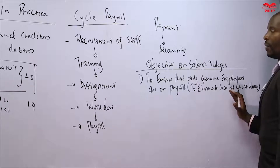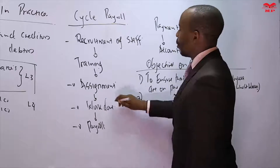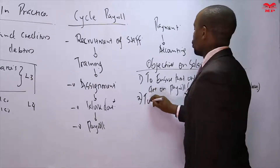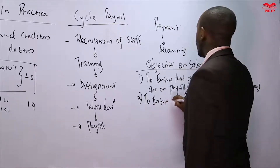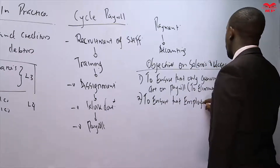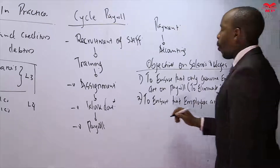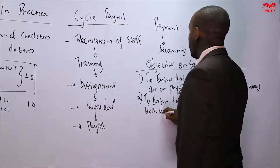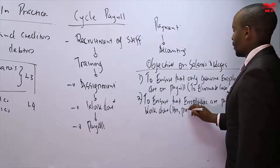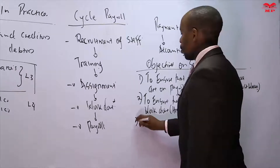The second objective concerns the employees themselves: we want to ensure that employees are paid for work done only. You cannot be paid for work you have not done. Most companies measure work done using hours worked; others measure it using pieces produced, which we refer to as piece rate.